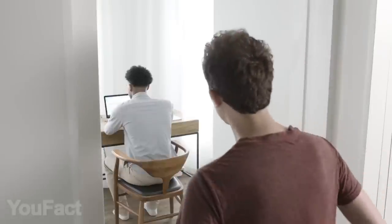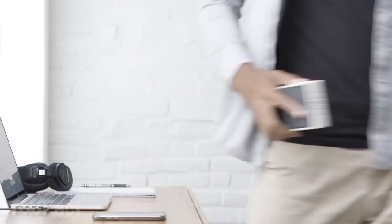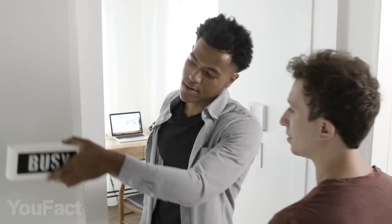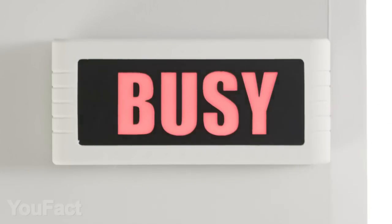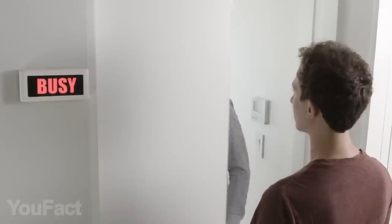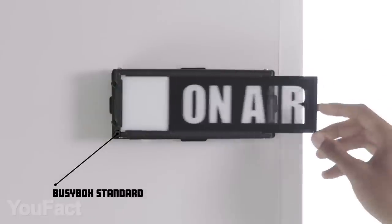Now, that's the thing that you've always wanted to have but didn't probably know it exists. It's called BusyBox, and the name speaks for itself. You mount the device to your door and let everyone know that you're extremely busy right now. But there's some really cool features worth mentioning. First, you can change the text in the box.